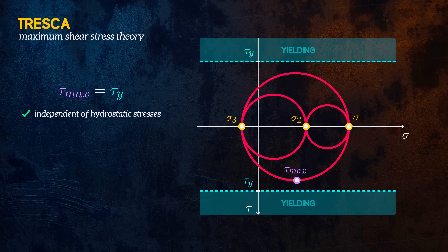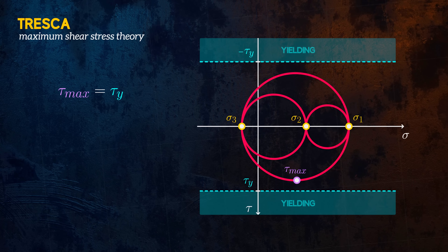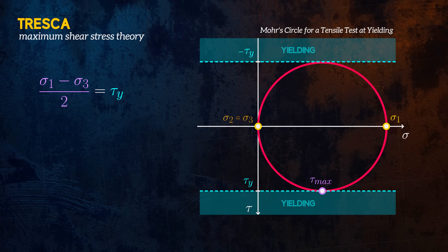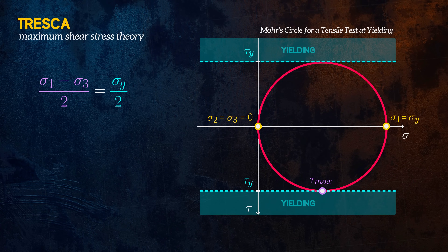It's common to express this theory as a function of the principal stresses instead of the shear stresses. We can see, based on Mohr's circle for a tri-axial stress state, that the maximum shear stress is equal to the radius of the outer circle, which is the difference between the maximum and minimum principal stresses divided by 2. Mohr's circle for a uniaxial tensile test at yielding shows that sigma-2 and sigma-3 are equal to zero, and sigma-1 is equal to the yield strength of the material. The shear stress at yielding is equal to half the yield strength, so we can rewrite the equation to obtain the standard formulation for the Tresca theory.